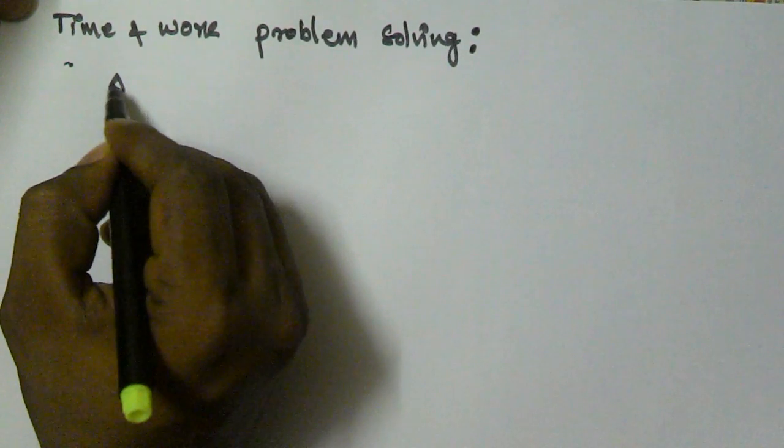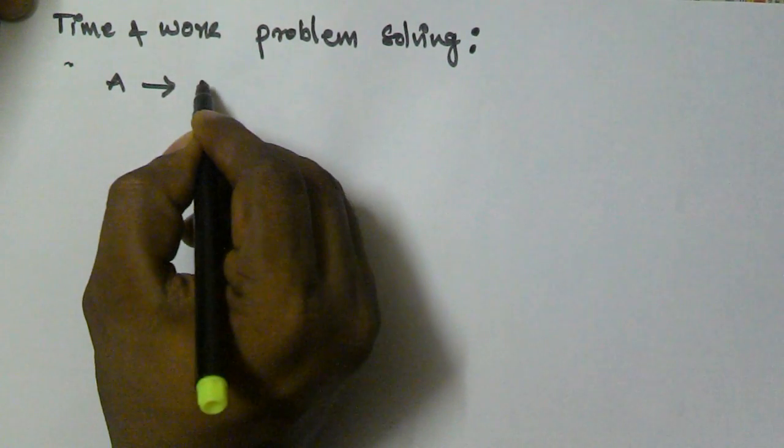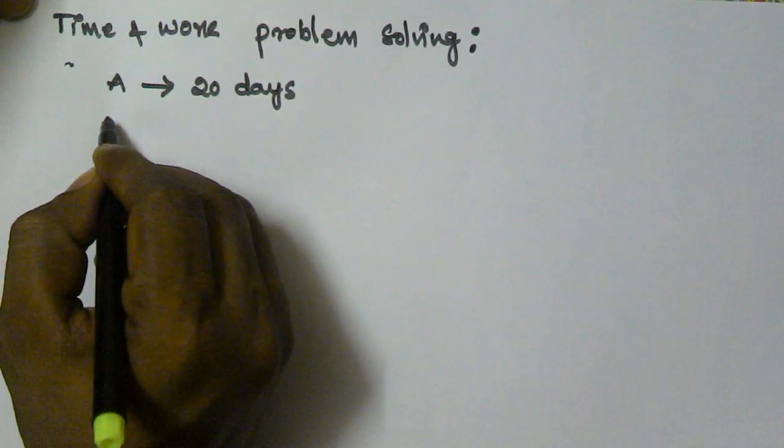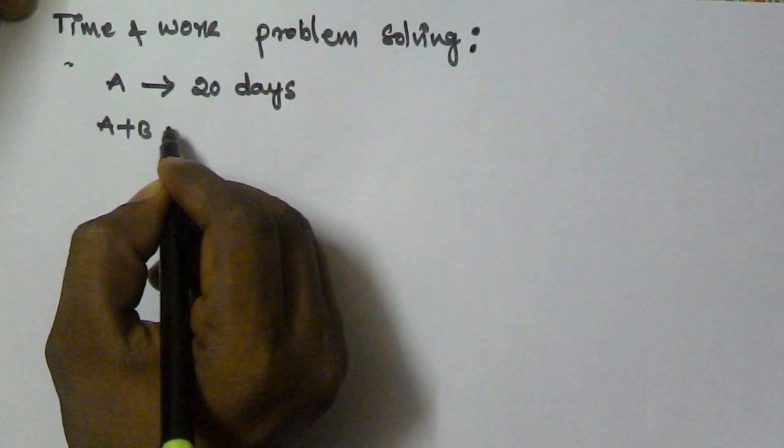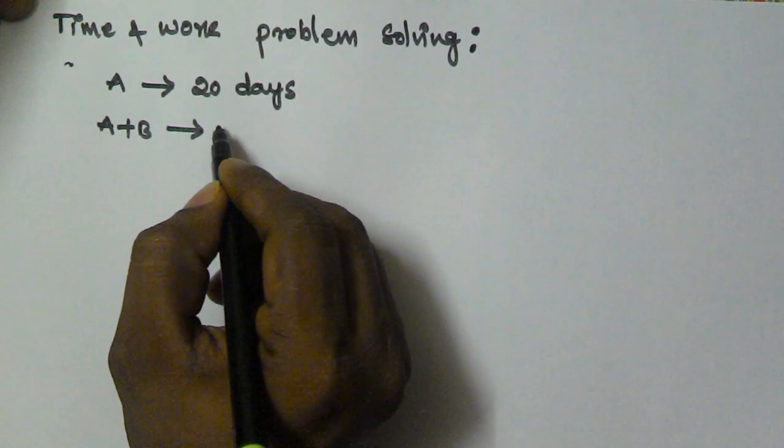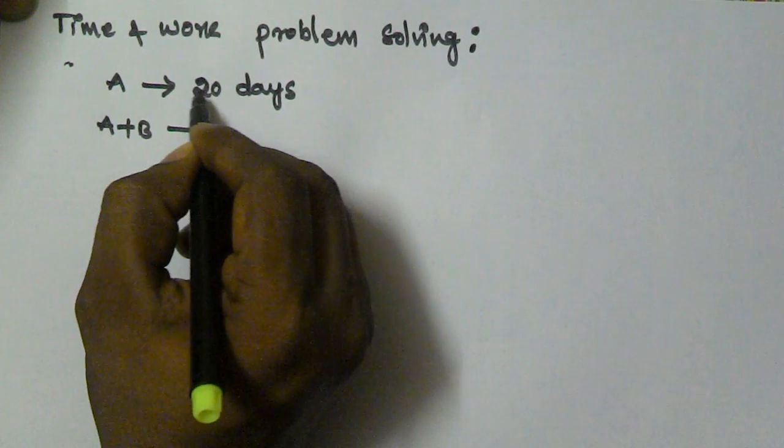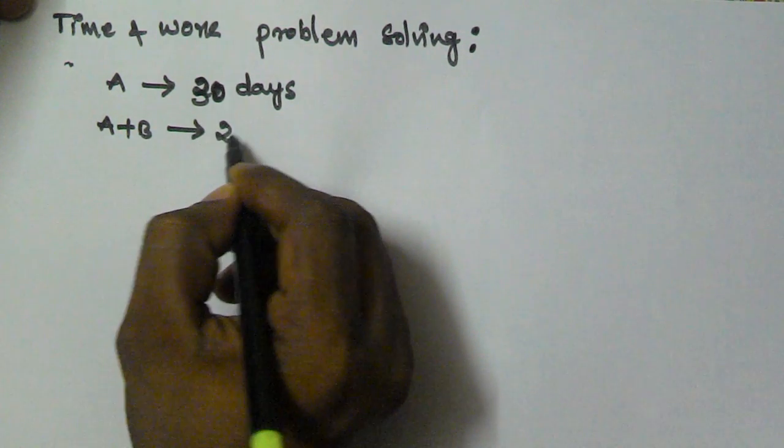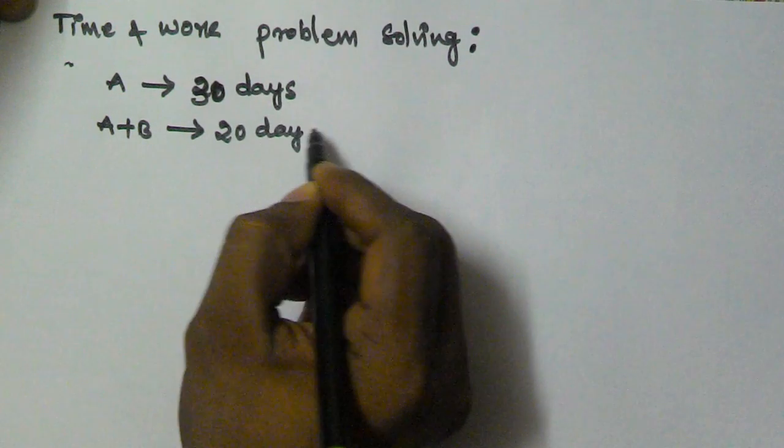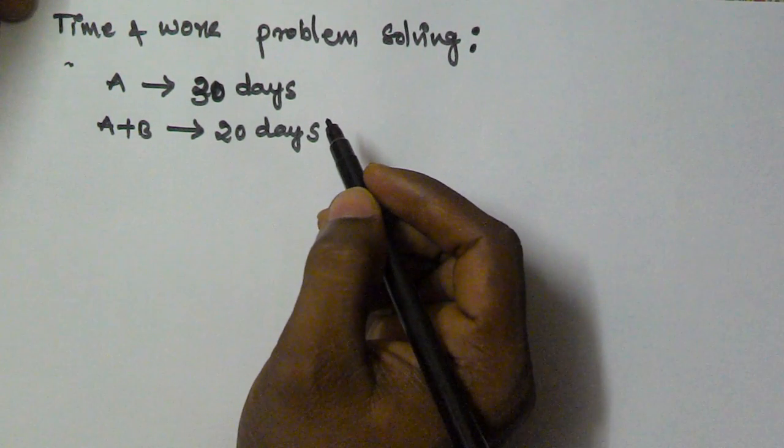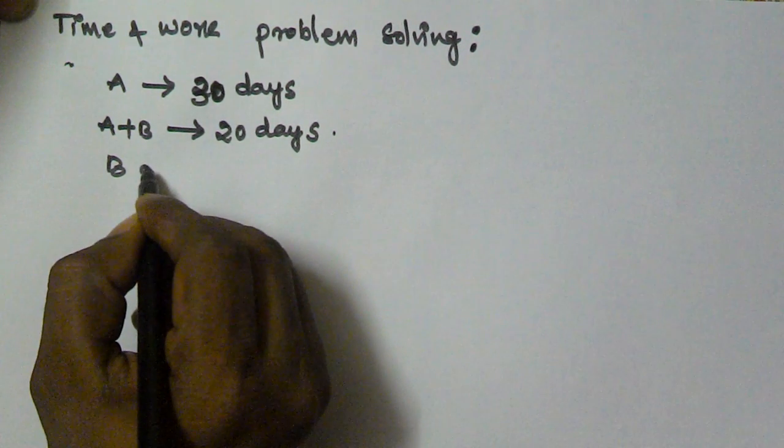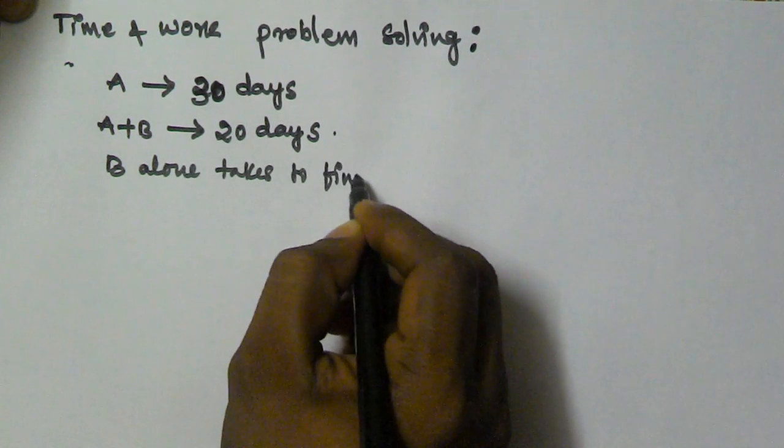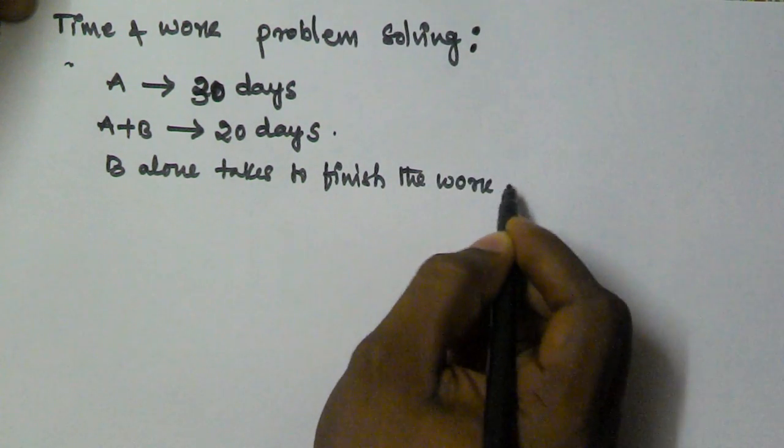Let's say a person A finishes the given work in 30 days, and person A and B together finish the same work in 20 days. So now, how many days does B alone take to finish the work?